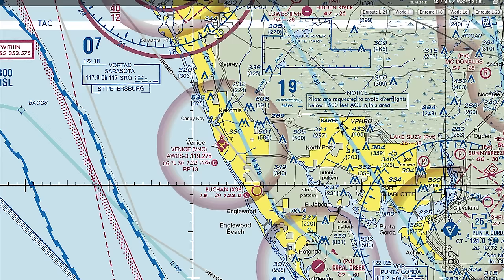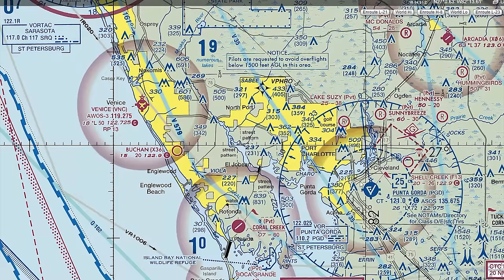We see Venice Airport in magenta, meaning it's a non-towered airport. Punta Gorda is blue — a towered airport. We notice the Class D ring, the blue dashed line, and the hazy magenta ring denoting that Class E airspace comes all the way down to 700 feet around Venice. Everywhere else, Class E airspace is at 1,200 feet with Class G below that. At Venice, it's Class G from the surface up to 700 feet, then Class E airspace above. Out here it's Class G from the ground up to 1,200 feet, then Class E.